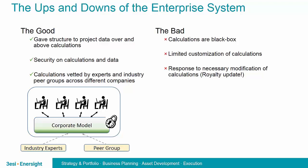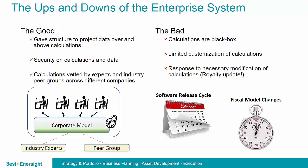But this approach isn't perfect either. In order to provide speed and efficiency, the calculations are often hidden from the user. People often refer to these types of systems as a black box — they don't know what's actually going into the calculations or how the data is coming out. The nature of the commercial application is such that users cannot modify the calculations. Tying into that, if changes did need to be made, there is often a time lag associated. If we think about a fiscal model as an example, these models can change fast and unexpectedly, or even during a negotiation, while the software release cycle is much more methodical and follows a longer time horizon.